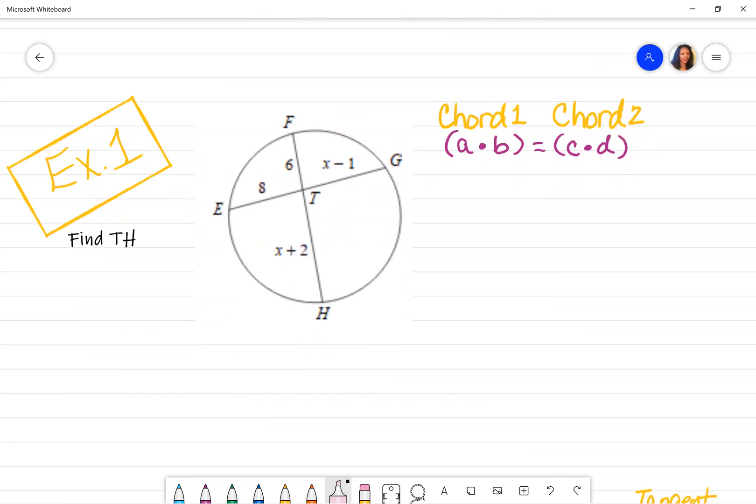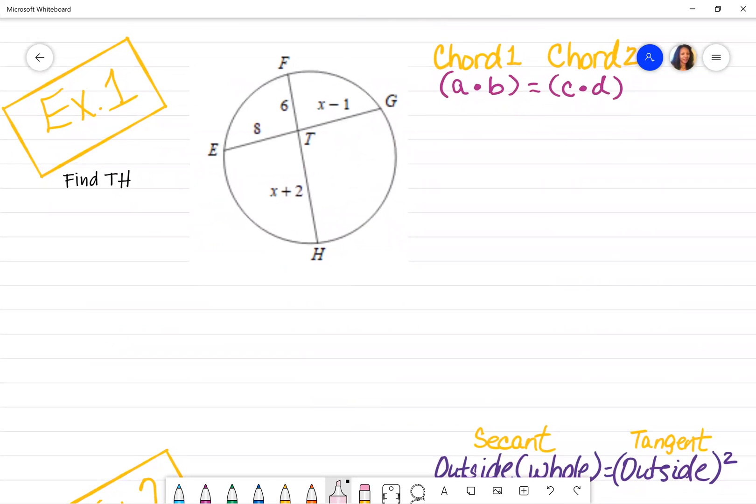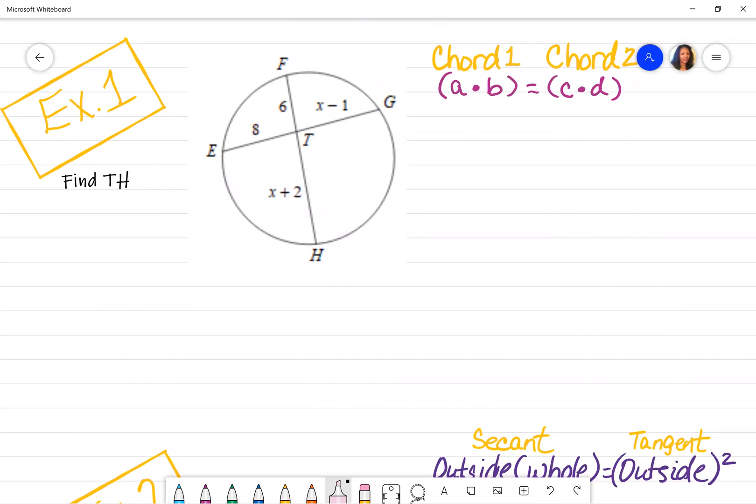So we're going to go ahead and start with example one, which is two chords or two intersecting chords. It does not matter which chord I choose first. So I'm going to work with this chord first. I'm going to break it into two parts, just like the formula tells me to. Instead of using A times B, I'm going to use the points that are shown here. So I'm going to say ET times TG.